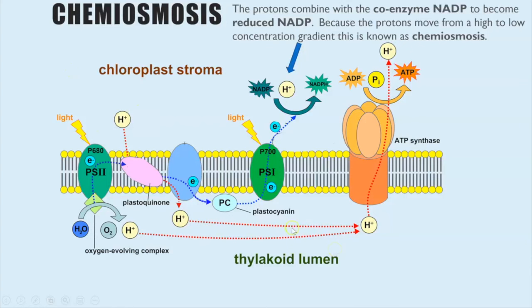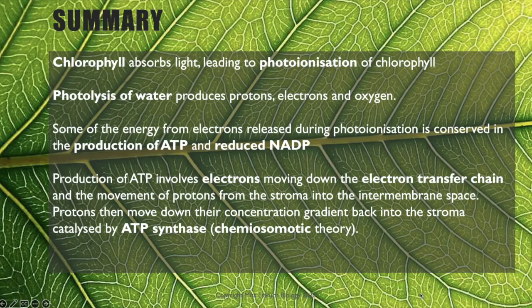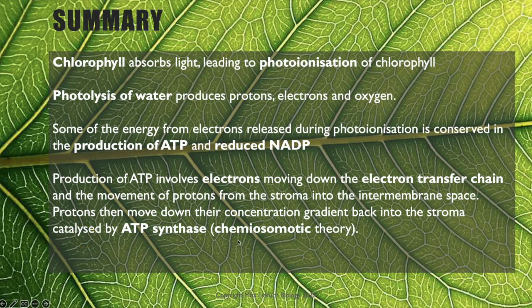That is the stage of chemiosmosis — creating an electrochemical gradient so protons can move down that gradient, enabling the production of ATP. In summary: light energy is absorbed by the chlorophyll, leading to photoionization and the release of excited electrons. The light energy also drives photolysis of water, producing protons, electrons, and oxygen. The energy from those electrons is used through chemiosmosis to create ATP and reduced NADP. The electrons move along the electron transfer chain; protons are pumped from the stroma into the intermembrane space, then flow back down their electrochemical gradient through ATP synthase, catalyzing ATP production.